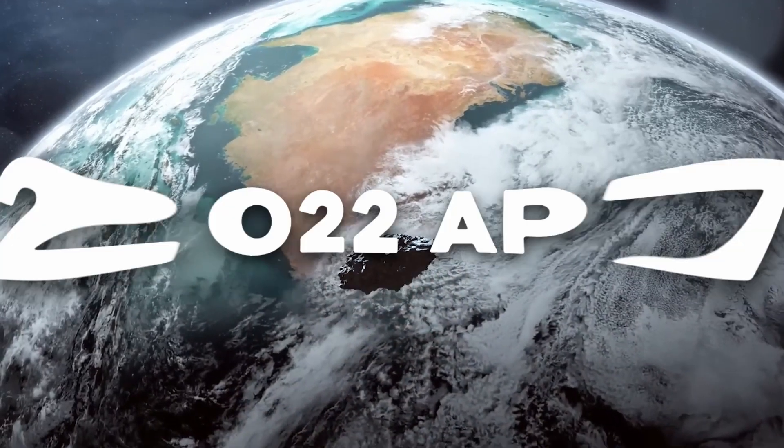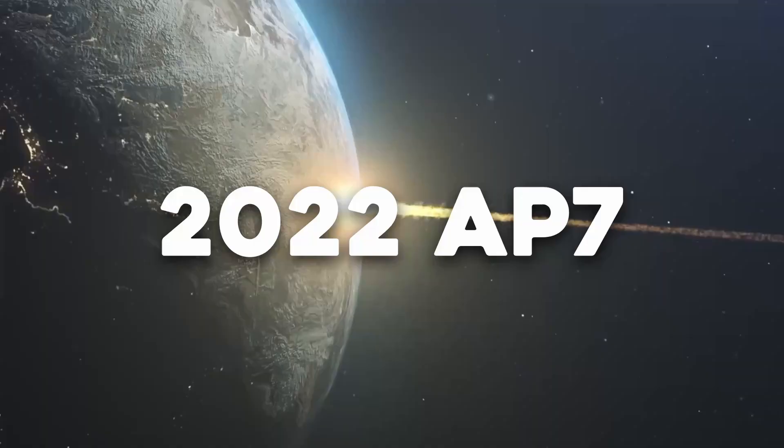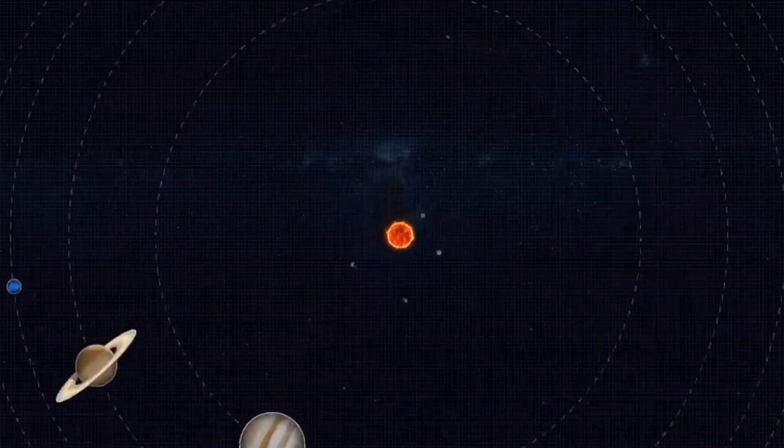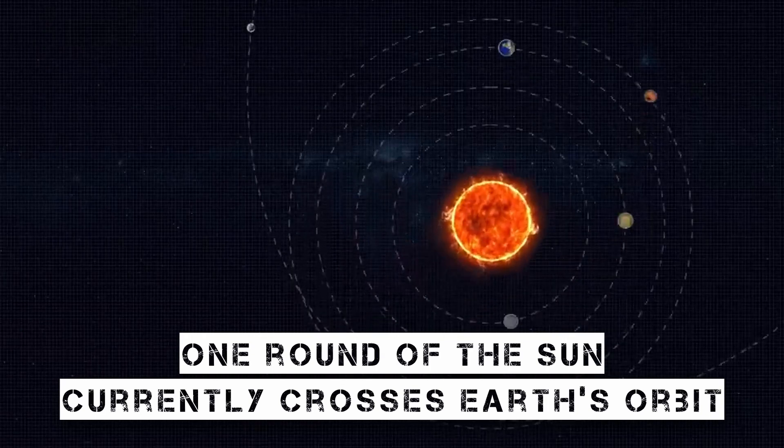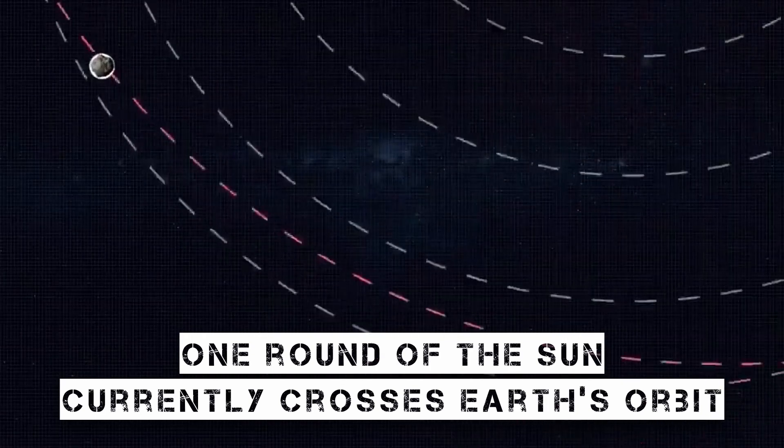A planet killer asteroid known as 2022 AP7 may have caught your attention if you've been browsing around lately. Every five years, it completes one round of the sun and currently crosses Earth's orbit when Earth is on the other side of the sun from it.